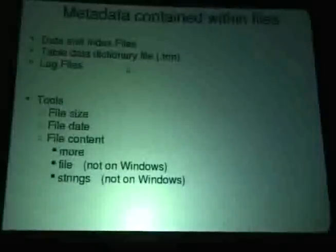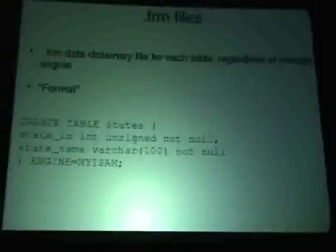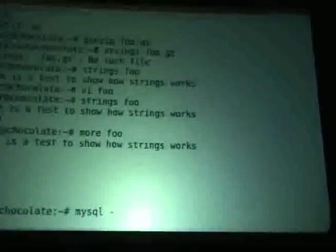Note that 'file' and 'strings' can't be used on Windows. The .frm file is the data dictionary — it basically shows how the table is put together, containing the table definition. If you do strings on an FRM file, you see the column names and table type, even though the raw file is mostly binary.